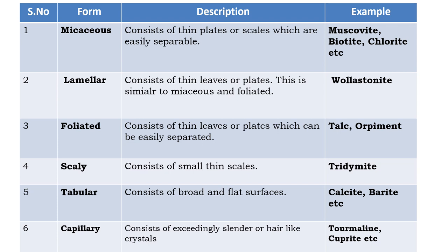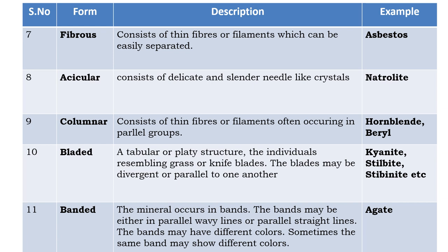Foliated form consists of thin leaves or plates which can be easily separated — examples are talc and phlogopite. Scaly form consists of small thin scales — example is tridymite. Tabular form consists of broad flat surfaces — examples are calcite varieties. Capillary form consists of exceedingly slender, hair-like crystals — examples are tourmaline and cuprite. Fibrous form consists of thin fibers or filaments which can be easily separated — example is asbestos.